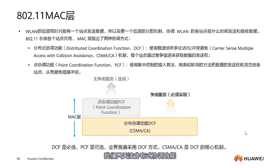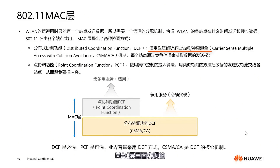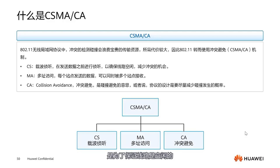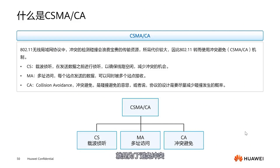This is Carrier Sense Multiple Access with Collision Avoidance. CS stands for carrier sense — listening before sending data to ensure the line is free, reducing conflicts. MA stands for multiple access, where data sent by one station can be received by multiple stations simultaneously. And finally, collision avoidance is part of our protocol's design, designed to avoid conflicts. We'll look specifically at how to avoid this later.